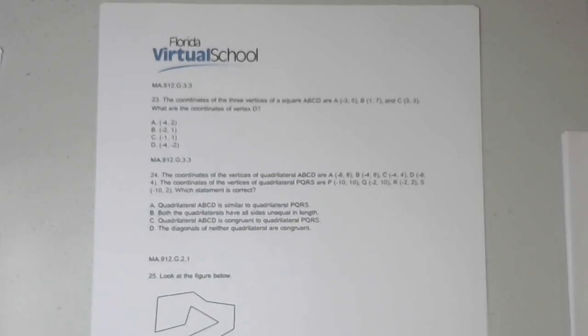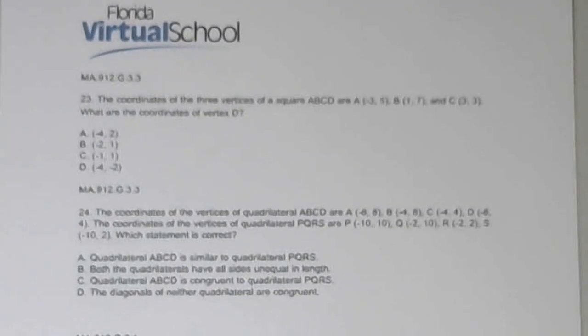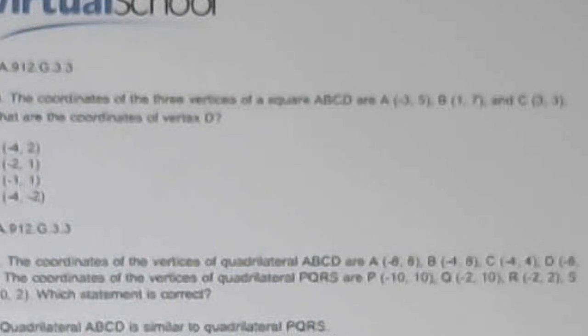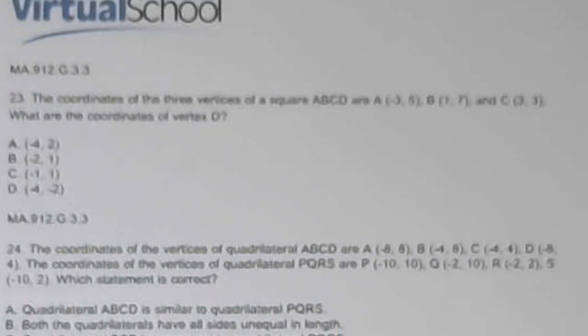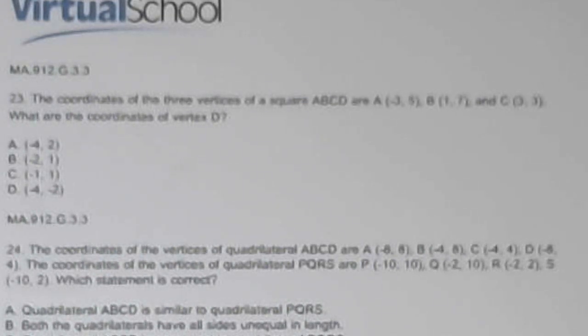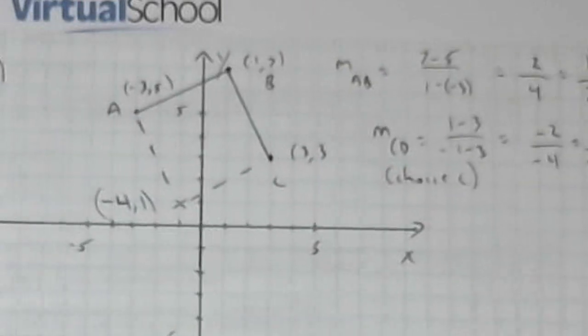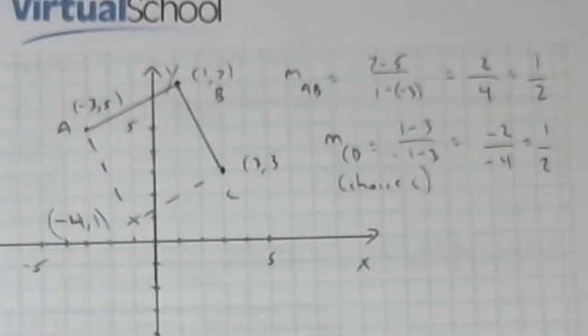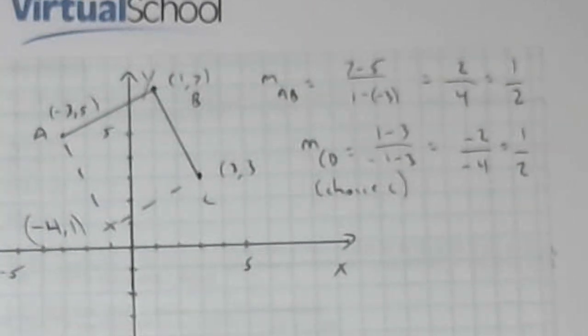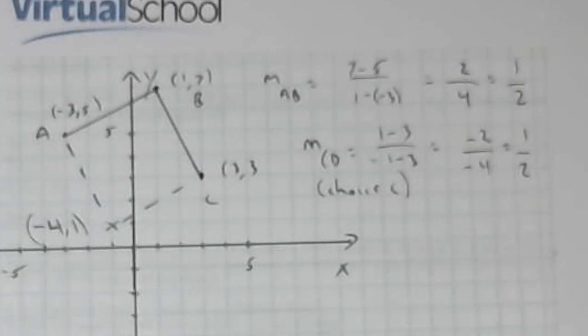Let me zoom in. Number 23 says the coordinates of three vertices of square ABCD are A(-3, 5), B(1, 7), and C(3, 3), and it asks for the coordinates of vertex D. Well, what I would do is do a quick sketch. Again, I don't know if they'll give you graph paper, but you can do it on online paper. It just has to be a ballpark.